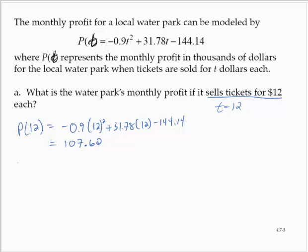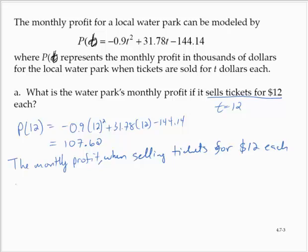So the monthly profit when selling tickets for $12 each is 107.62 thousand, which means $107,620, roughly $107,000.